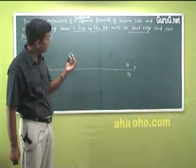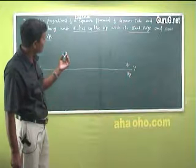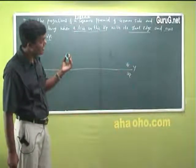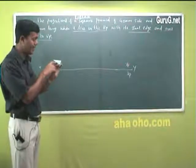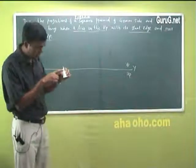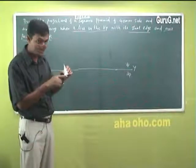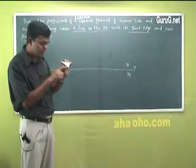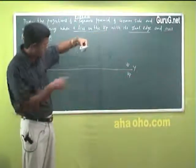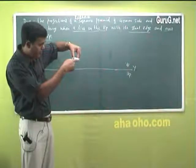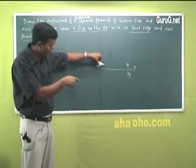The pyramid is 40 mm side and axis 60 mm long, lying on the HP with its slant edge and axis parallel to VP. I should make one slant edge — not the face — lie on HP. Edge is a line. I cannot make the full face lie on HP. Very important: only one edge should lie on HP.